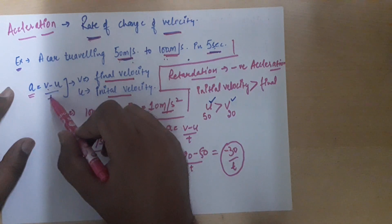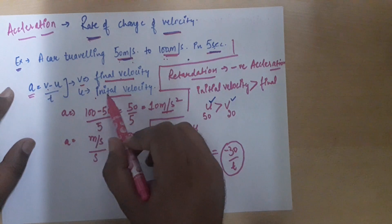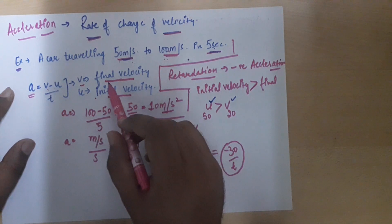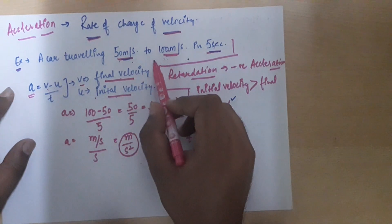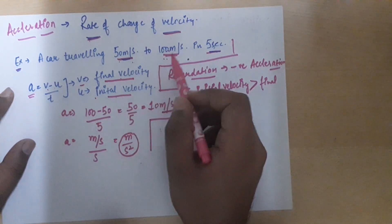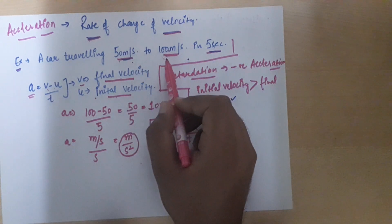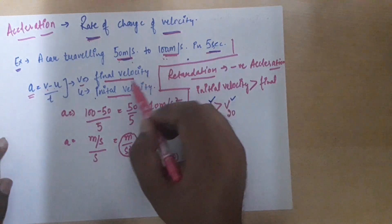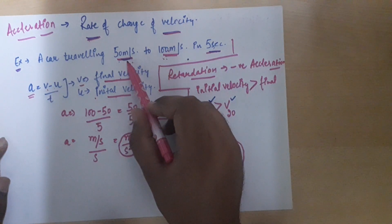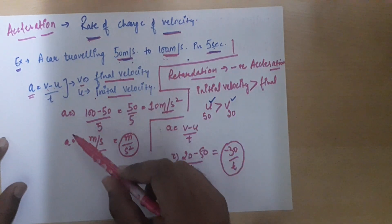Acceleration is (v minus u) divided by t. Here, v is the final velocity and u is the initial velocity. The final velocity is the velocity which is achieved — here, 100 meters per second was achieved, so that is the final velocity. The initial velocity is 50 meters per second, the original velocity.